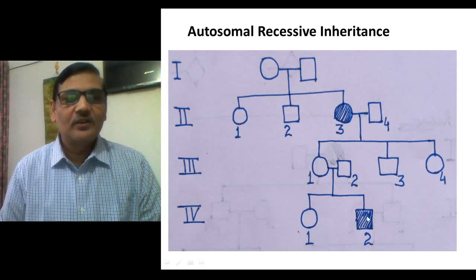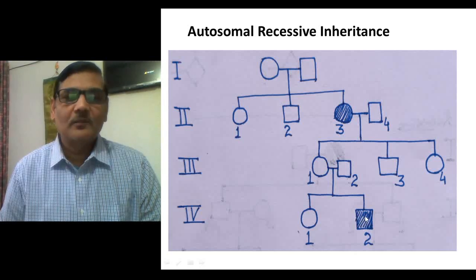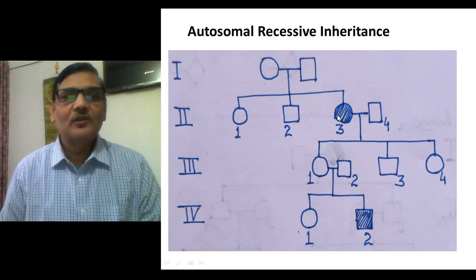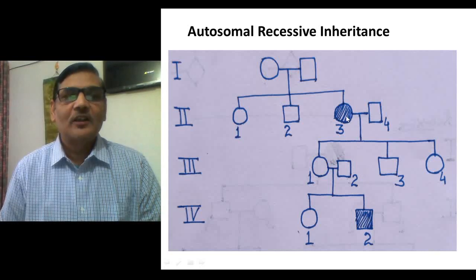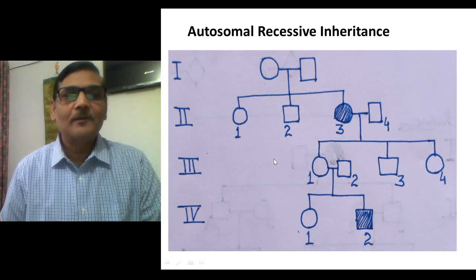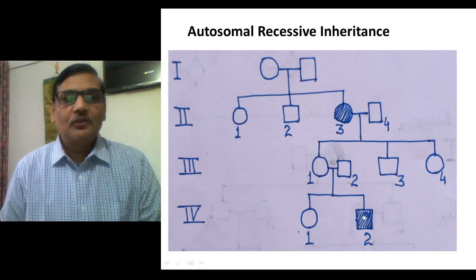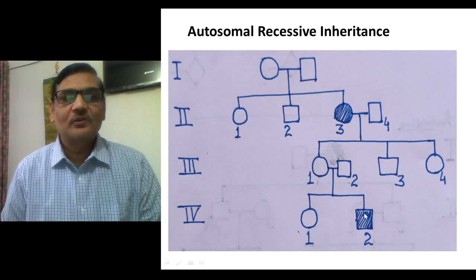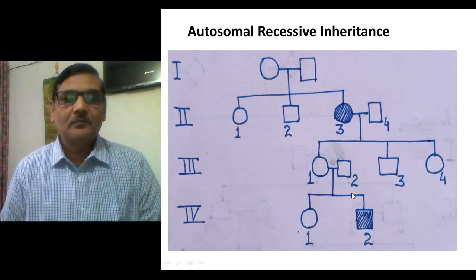Likewise, in the fourth generation, a male child shows the expression of the disease. Autosomal recessive diseases are expressed in both sexes with equal probability — it is not sex-dependent at all. The disease can be expressed in males as well as females equally, and an individual who shows the disease may have parents who appear normal, since the condition is recessive. So parents may be unaffected while some of their children may have the disease.